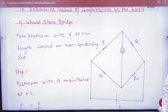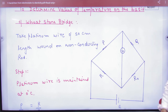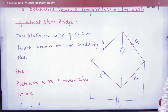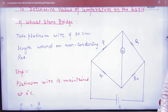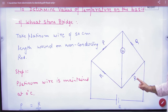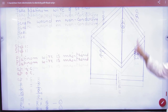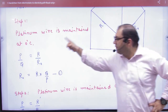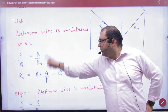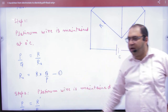Let's balance the bridge. You have to select P, Q, and S such that the bridge is balanced. So what will the ratio be? P by Q is equal to R by R0. So the first step is clear: at 0 degrees Celsius, P by Q equals R by R0.